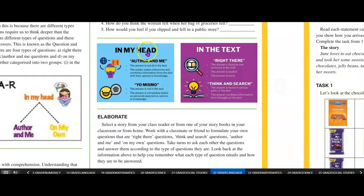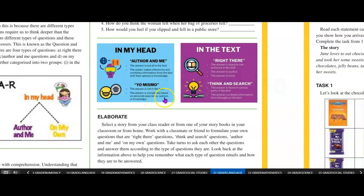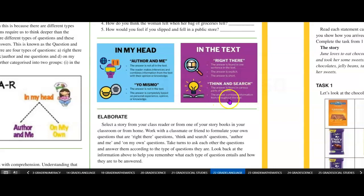Let's look at this graphic. In my head, in the text: Author and me — the answer is not in the text; the reader makes inferences and combines information from the text with their opinion or knowledge. On my own — the answer is not in the text; the answer is completely based on personal experience, opinion, or knowledge. In the text, right there — the answer is found in one of the sentences in the text; the answer is explicit and short. Think and search — the answer is found in various parts of the text; the answer combines information from throughout the text.